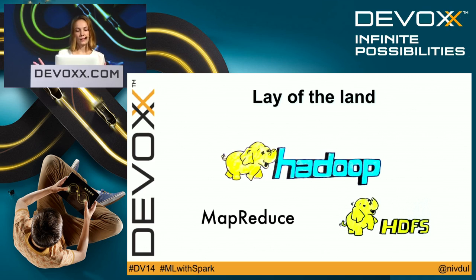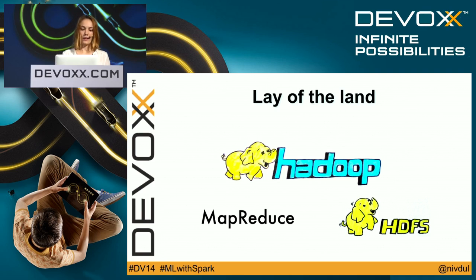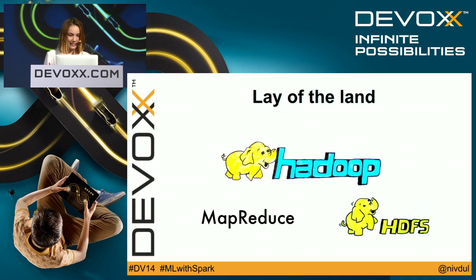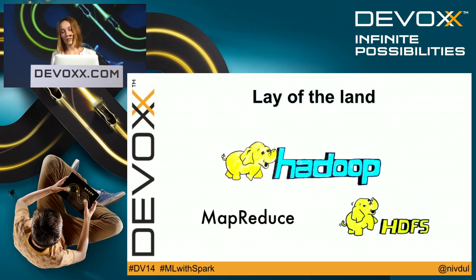Today in the big data world, Hadoop MapReduce and HDFS are highly dominant for large-scale data processing. Hadoop is a scalable, reliable, distributed cluster. HDFS is the Hadoop file system — a storage system. And MapReduce is a pattern for parallel computation.